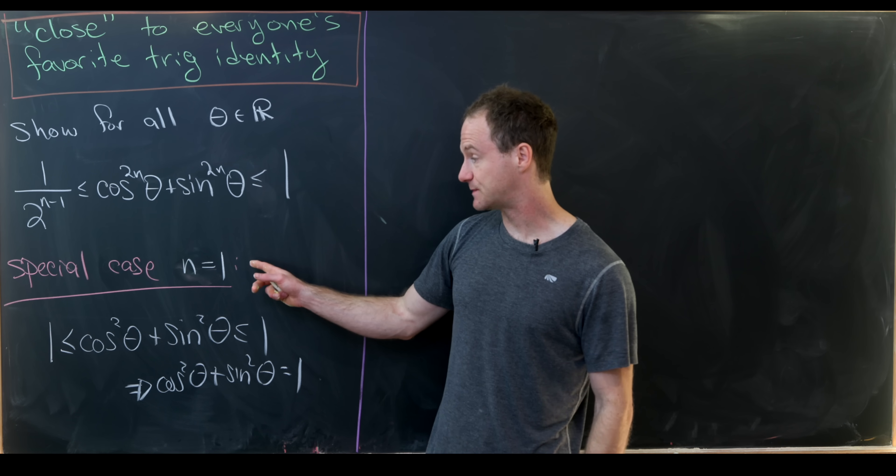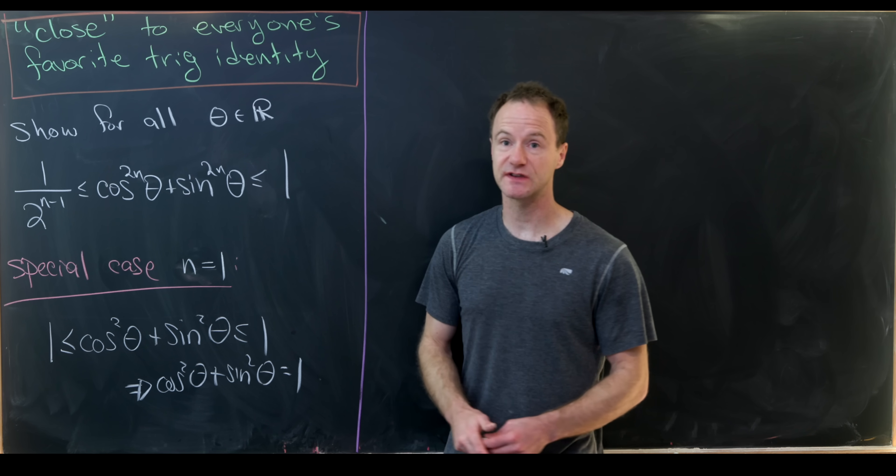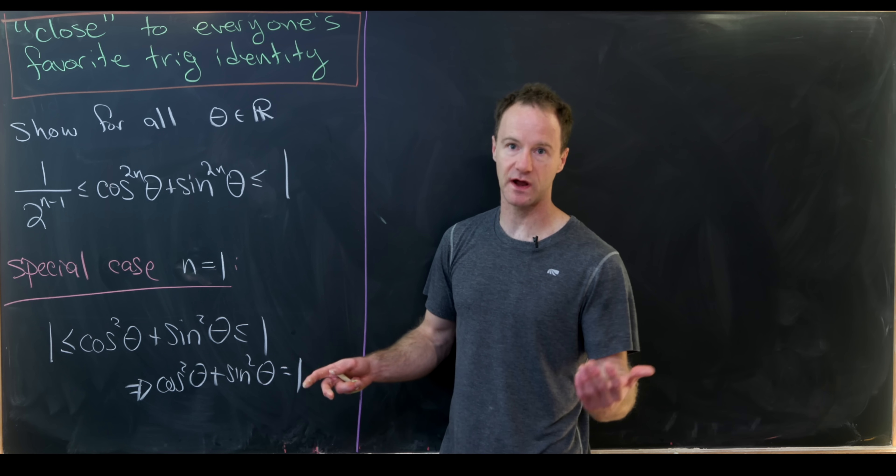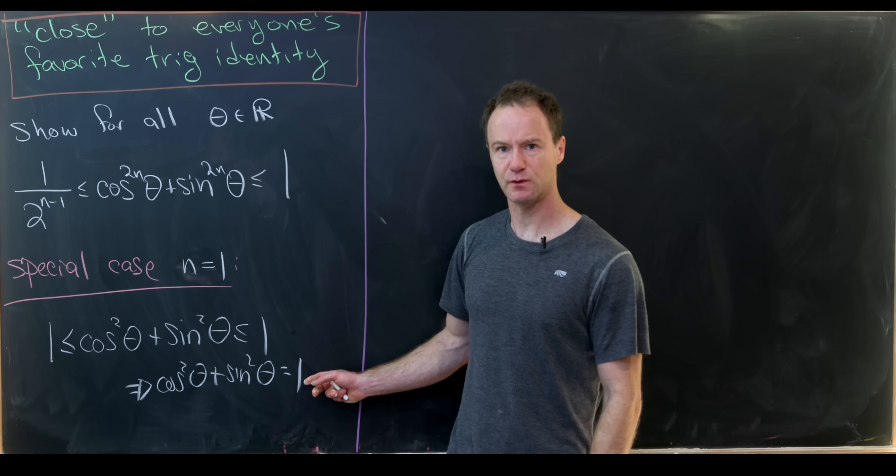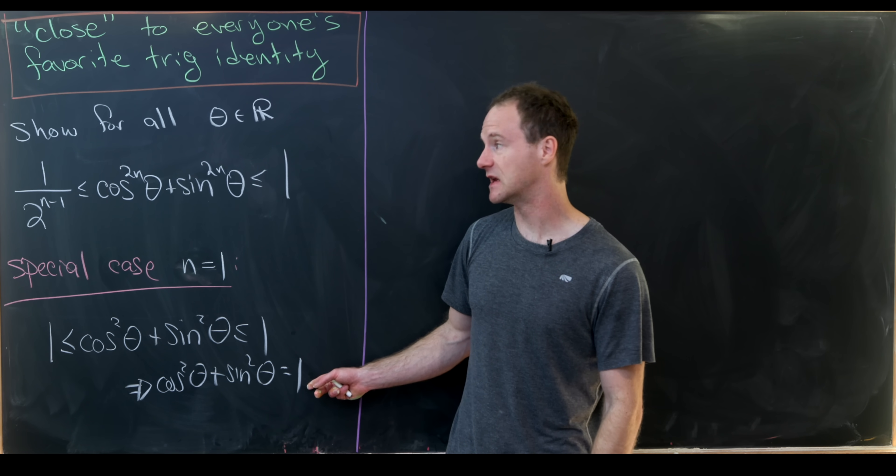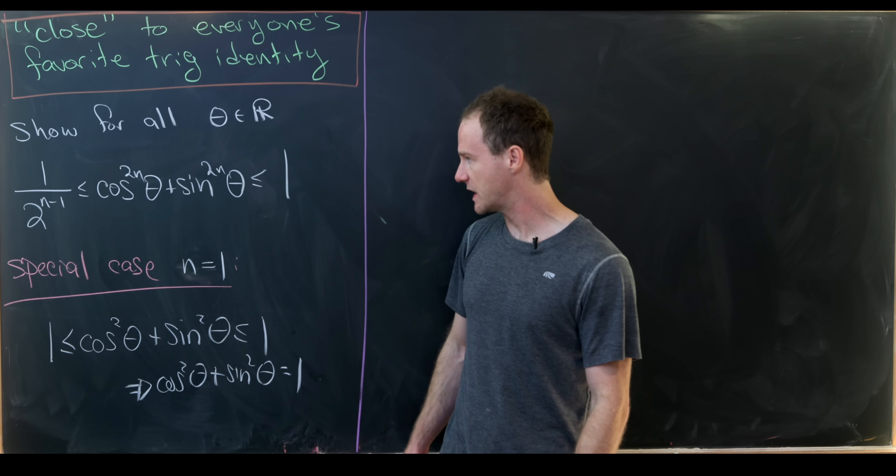And let's look at our special case. We'll simplify down to the inequality which pins cosine squared plus sine squared between 1 and 1, which clearly just retrieves this identity, which we will use during our calculation here. Okay, nice.